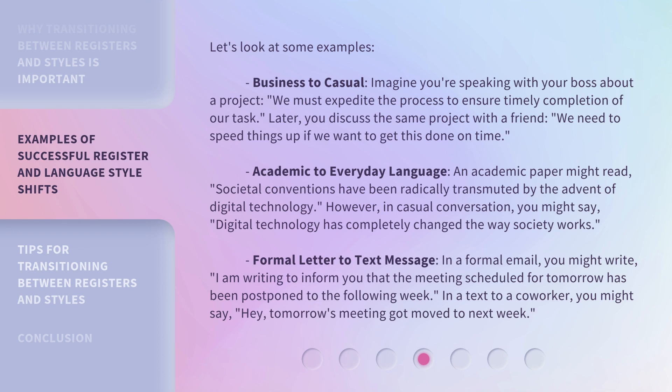Academic to everyday language: an academic paper might read, 'Societal conventions have been radically transmuted by the advent of digital technology.' However, in casual conversation, you might say, 'Digital technology has completely changed the way society works.' Formal letter to text message: in a formal email, you might write, 'I am writing to inform you that the meeting scheduled for tomorrow has been postponed to the following week.' In a text to a co-worker, you might say, 'Hey, tomorrow's meeting got moved to next week.'